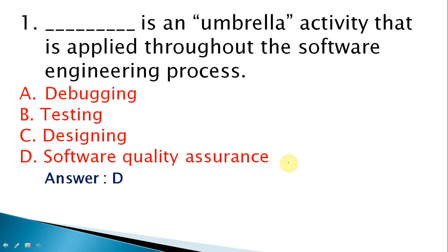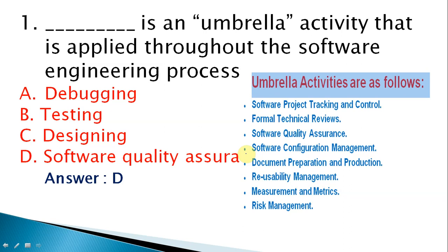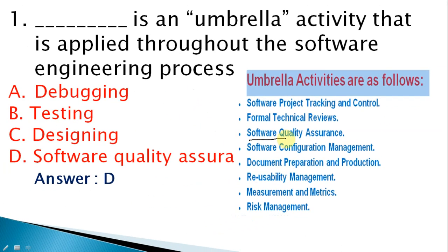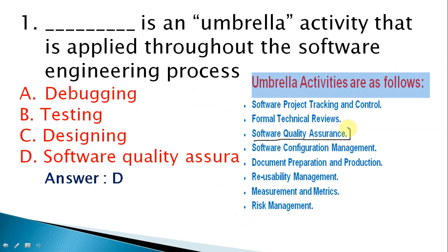What is an umbrella activity? There are 8 types of umbrella activities: software project tracking and control, FTR (formal technical review), SQA (software quality assurance), and software configuration management, among others. Software quality assurance runs from software development project start up to completion — that is what the umbrella activity follows.